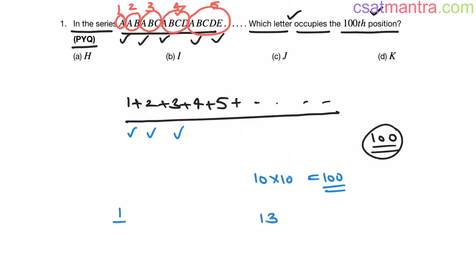So 1 to 13, sum of n natural numbers. 1 to 13, that is first term plus last term by 2 into number of terms, which is 13. So this is 14 by 2 into 13. This is 7 into 13. 13 sevens are 91.